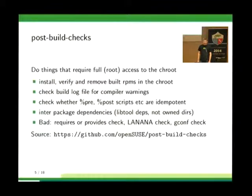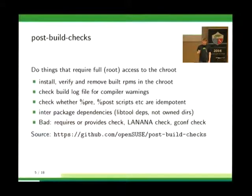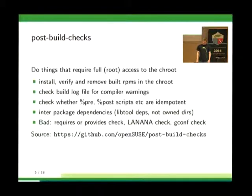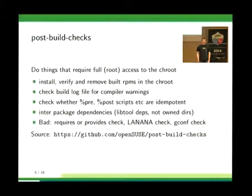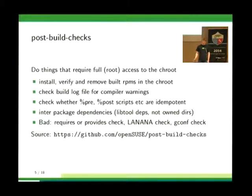Some GCC warnings are considered so bad by the script that they fail your build. It's important to know that this check is in post-build checks because you cannot override it — if the check fails, you basically have to fix the issue. Another check runs pre and post scripts several times to ensure they don't have side effects that prevent them from running again; that was necessary when we had patch RPMs. They also check package dependencies to ensure that within your set of built packages your dependencies are fine — something RPM-Lint cannot do.